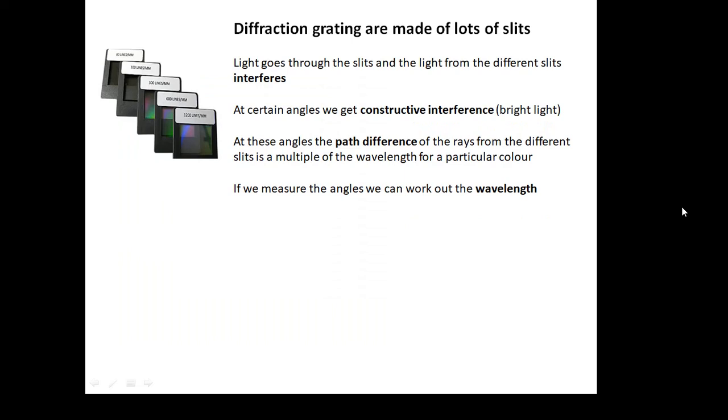And what happens is that we put the light through the diffraction grating and we get interference. Each slit acts as a source and then all of these different sources interfere with each other. If you don't know about interference, I've already done a video on this. You should have a look at it first. At certain angles, we get constructive interference.